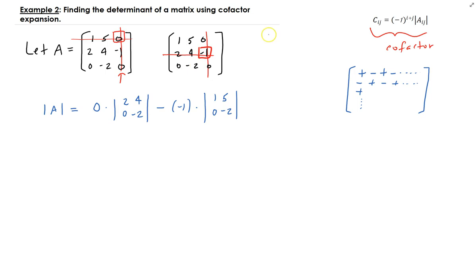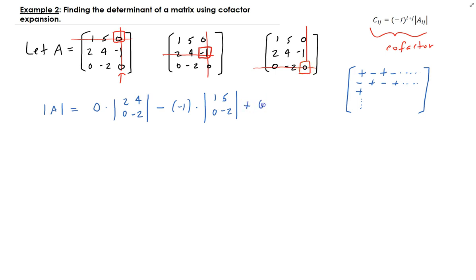For one more: the matrix is 1, 5, 0 / 2, 4, −1 / 0, −2, 0. For this entry, we cover up the third column and third row. For the sign, that position is plus. So it's going to be plus zero times the determinant of the submatrix 1, 5, 2, 4. That submatrix comes from covering the third row and third column, giving entries 1, 5, 2, 4.